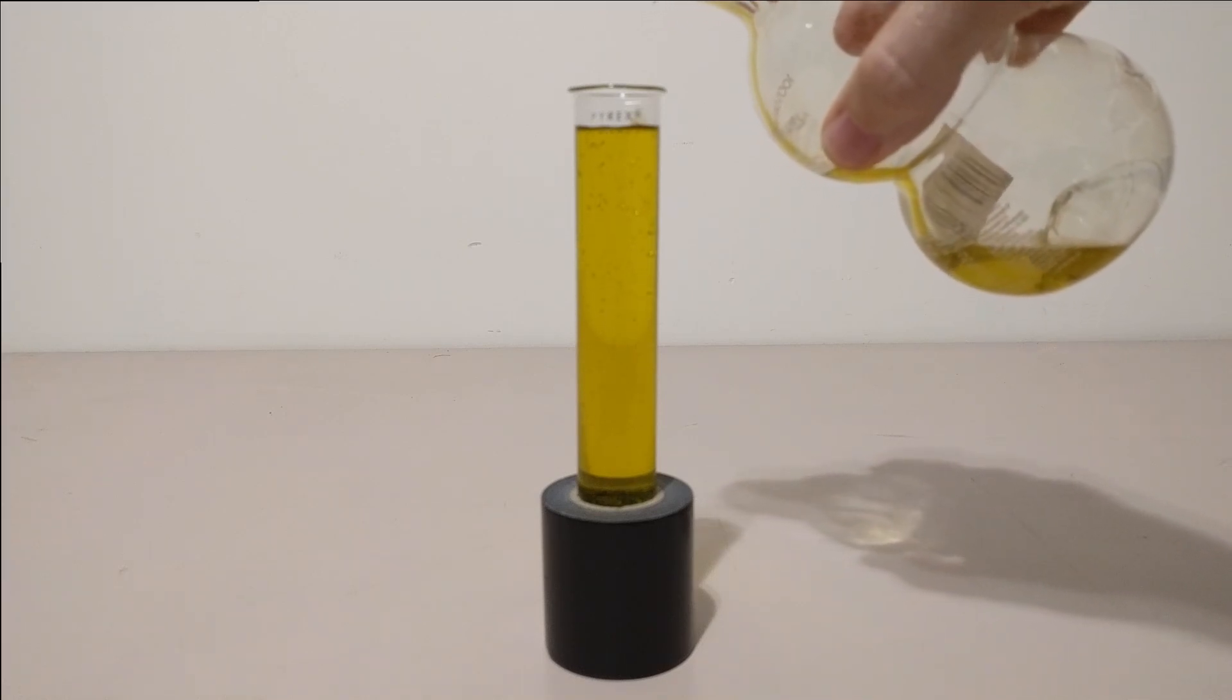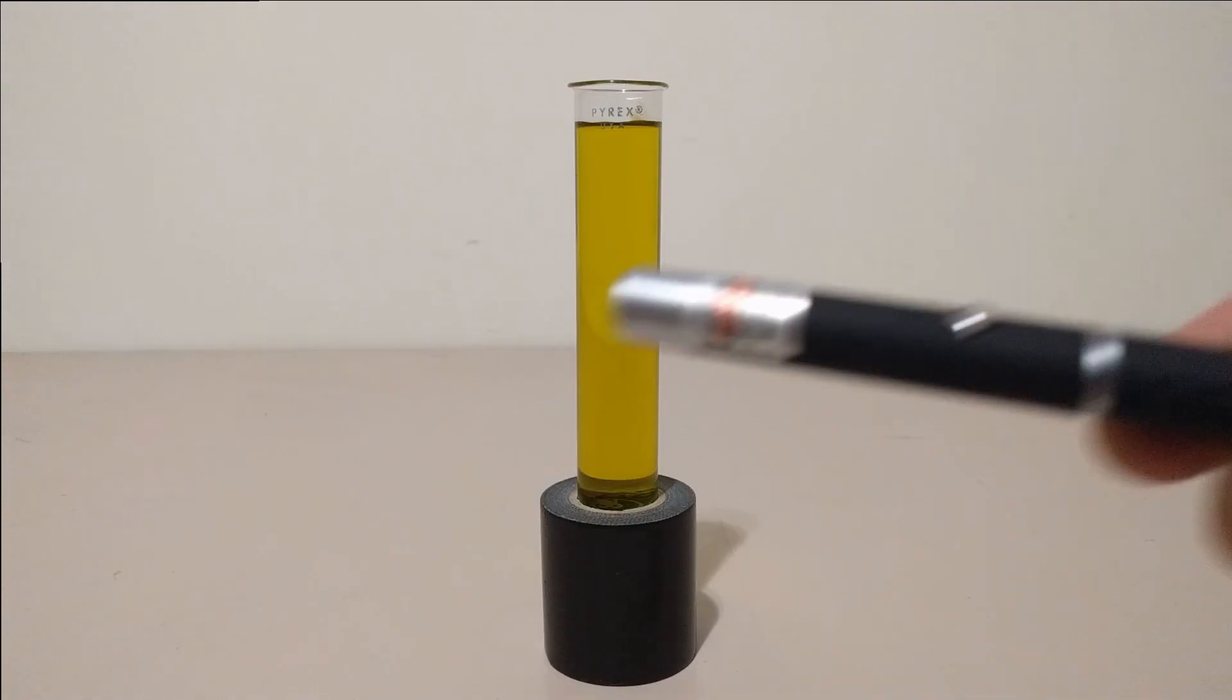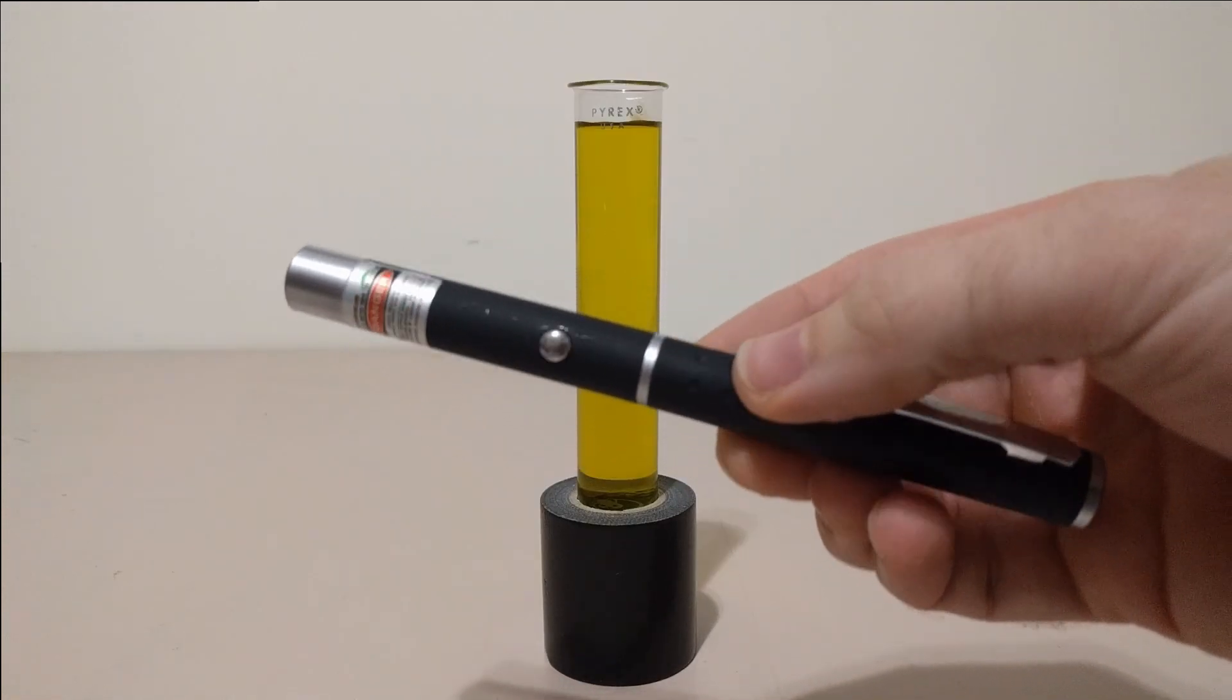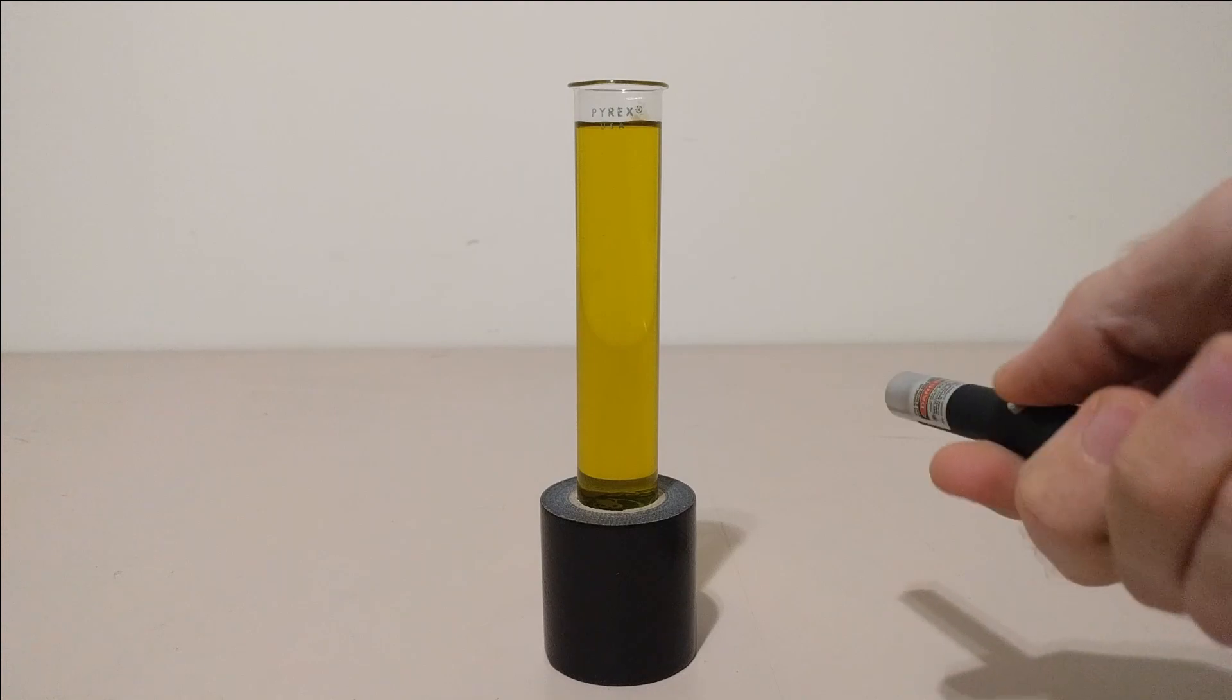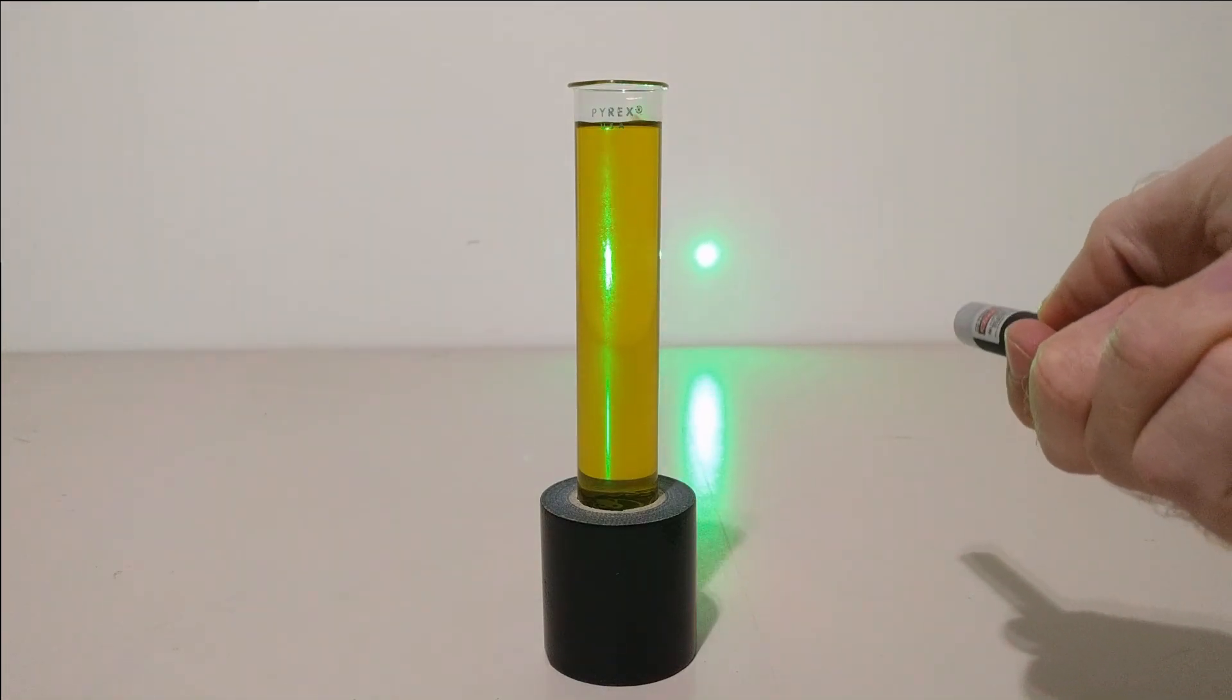The absorbed light raises the electrons to a higher energy level. It is these electrons that do the work of photosynthesis by passing on to carrier molecules in the plant's electron transport chain.